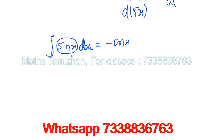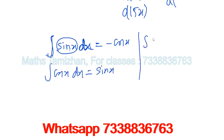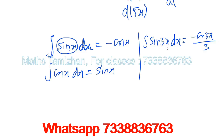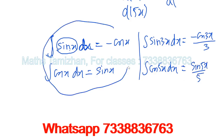So: integration of sin x is minus cos x, and integration of cos x is sin x. For example, integral of sin 3x dx: sin becomes minus cos, so the answer is minus cos 3x divided by 3. And integration of cos 5x equals sin 5x divided by 5. So the two key formulas are: sin integrates to minus cos, and cos integrates to sin.